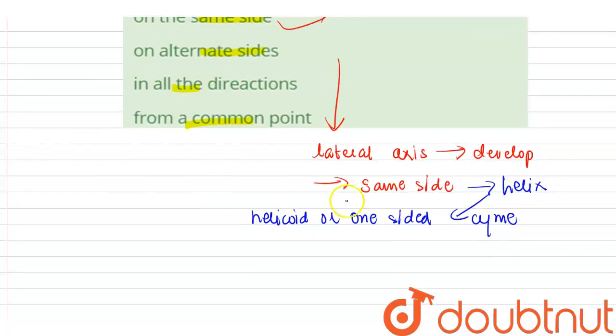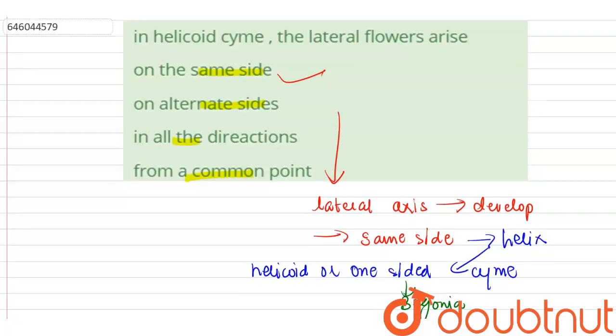Examples include begonia and some members of Solanaceae. So the correct option is 'on the same side,' not on alternate sides, in all directions, or from a common point.